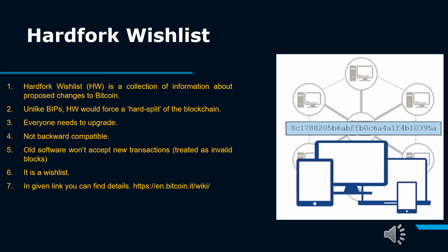It's also risky, as it's possible that Bitcoin spent in a new block could then be spent again on an old block, since merchants, wallets, and users running the previous code would not detect the spending on the new code, which they deem invalid. The only solution is for one branch to be abandoned in favor of the other, which involves some miners losing out. The transactions themselves would not be lost, they'd just be reallocated. Or, all nodes would need to switch to the newer version at the same time, which is difficult to achieve in a decentralized, widely spread system. Or, Bitcoin splits — which has happened — Bitcoin Cash. Hard Fork Wishlist, HW, is a collection of information about proposed changes to Bitcoin. Unlike BIPs, HW would force a hard split of the blockchain. Everyone needs to upgrade. It is not backward compatible. Old software won't accept new transactions and will treat them as invalid blocks. It is a wishlist. Details can be found at the given link.